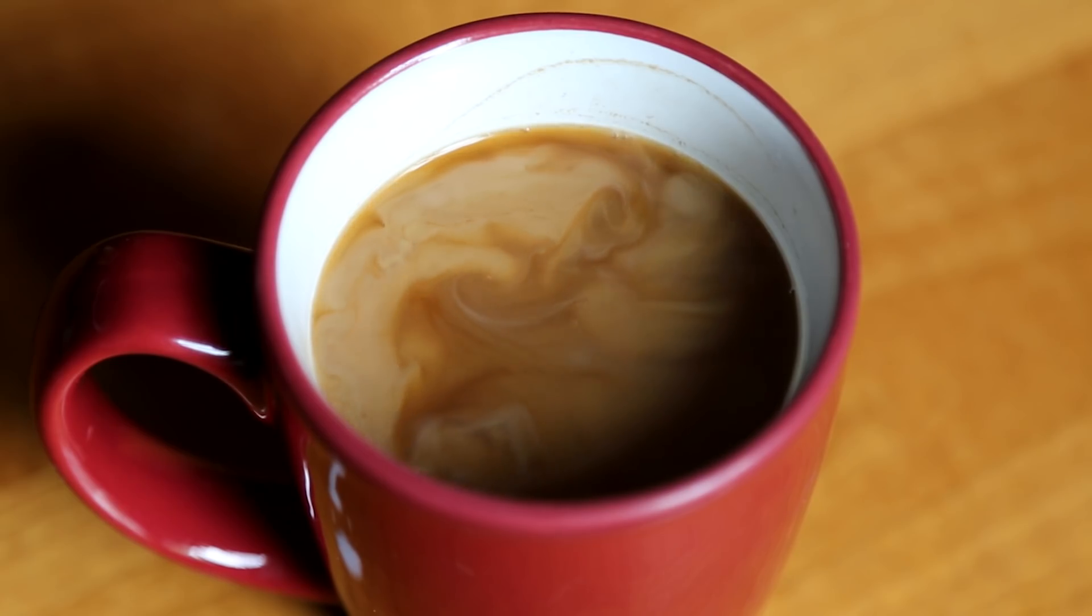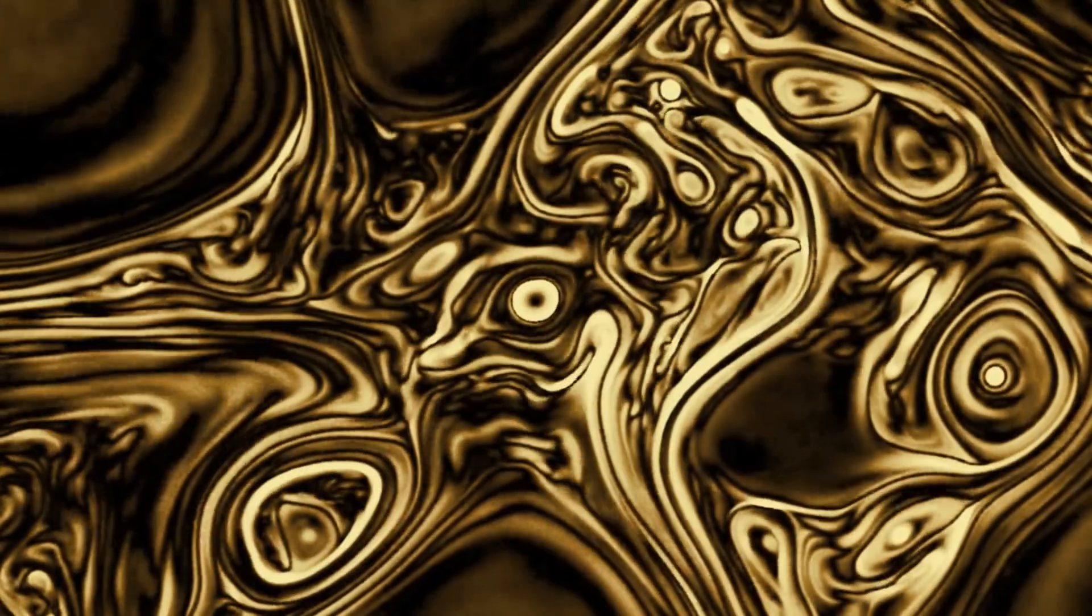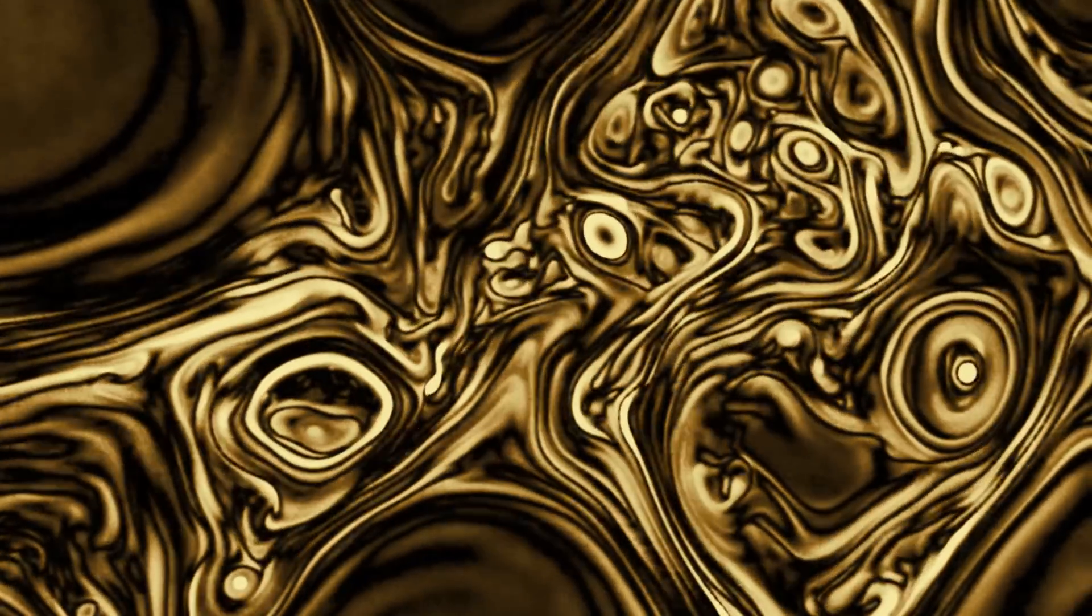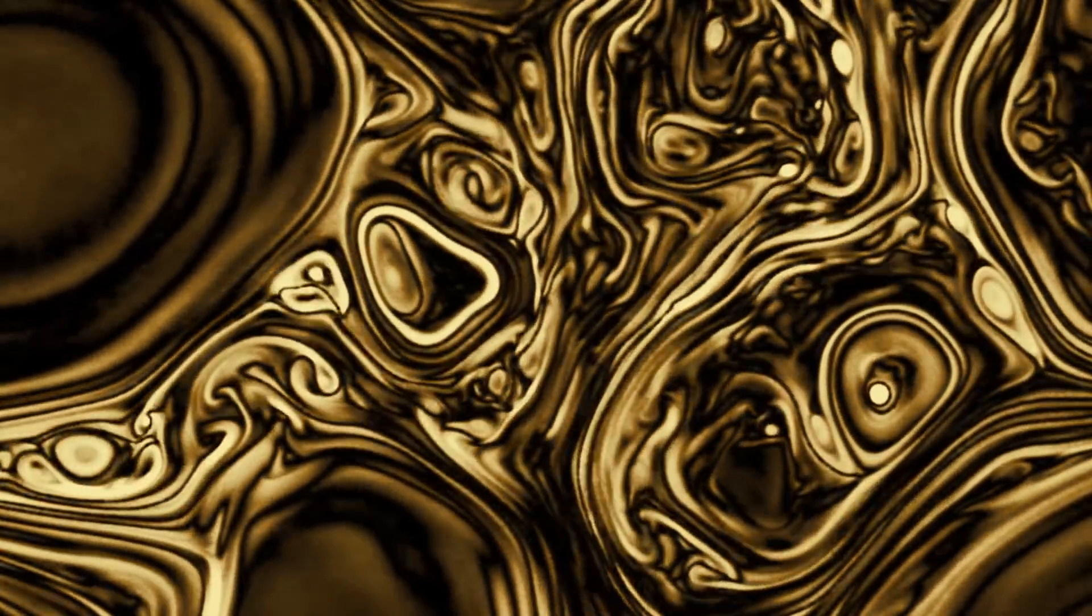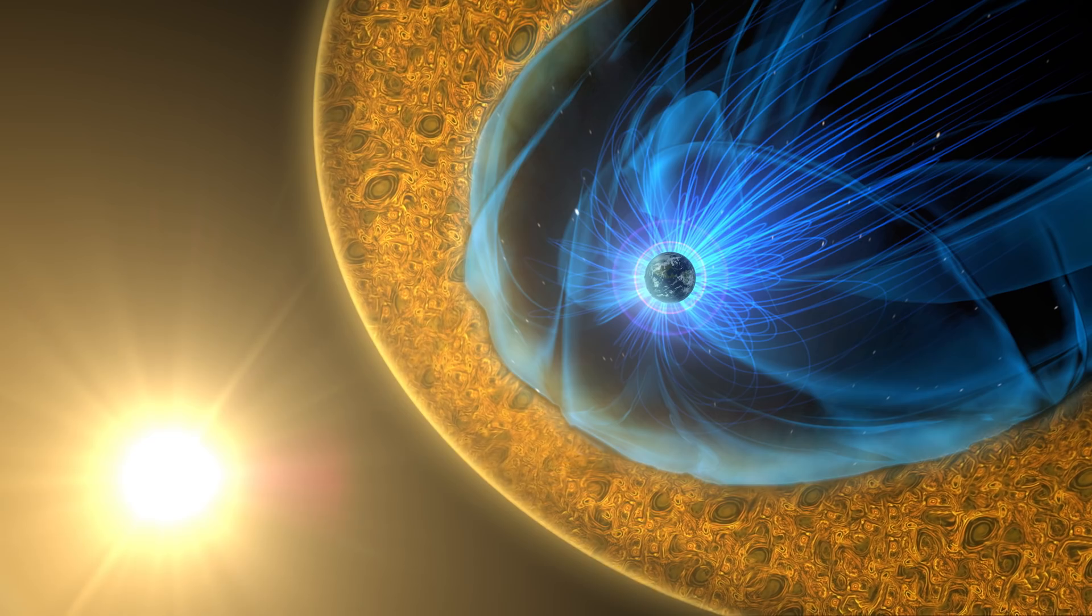Just like when you mix milk into coffee, turbulent plasma in space moves randomly and creates vortices. It can transport particles and energy but a lot is unknown about how these particles move through these regions.